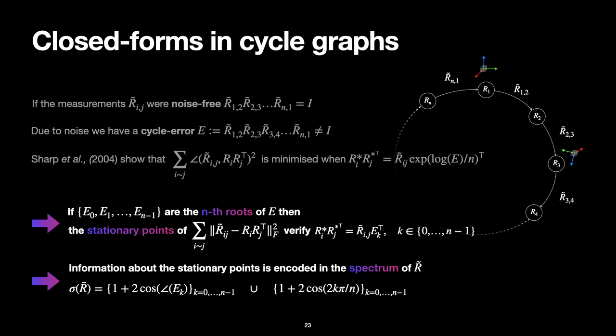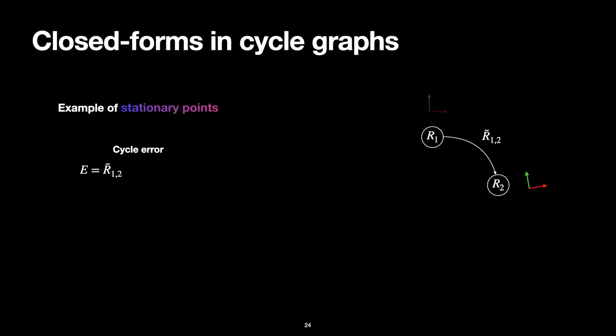We go one step further and characterize the spectrum of the measurement matrix denoted by R̃, and show how it relates to the stationary points. To give you an example, here we have a cycle graph, and we integrate the pairwise rotations until we go back to the original first pose. As we can see, we have an inconsistency, which corresponds to the cycle error.